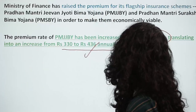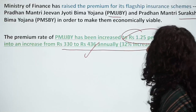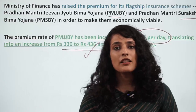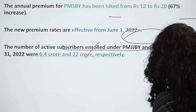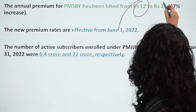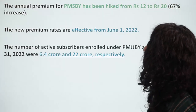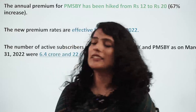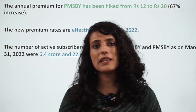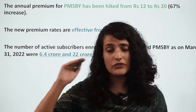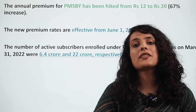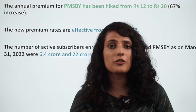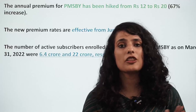Both Suraksha Bima Yojana and Jeevan Jyoti Bima Yojana have had their premiums raised. Suraksha Bima Yojana ka pehle purana premium tha rupees 12, ab woh badh ke ho gaya hai rupees 20 per annum. Suraksha Bima Yojana is accident insurance, and Jeevan Jyoti Bima Yojana is life insurance. Atal Pension Yojana ka registration age group has been increased from 18-40 years to 18-50 years of age.